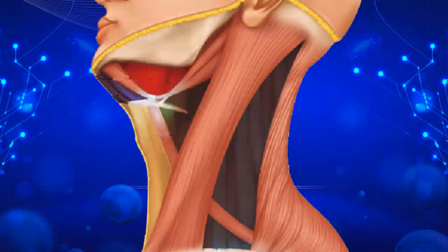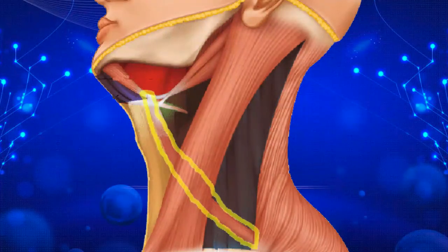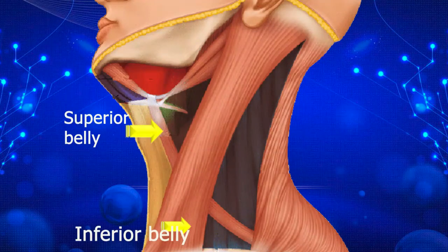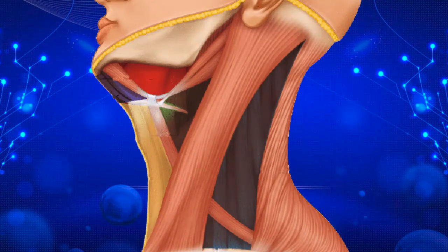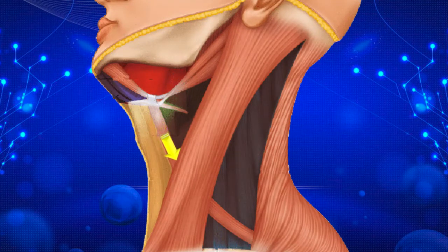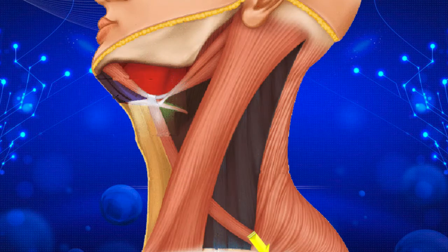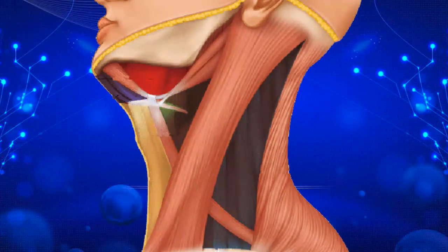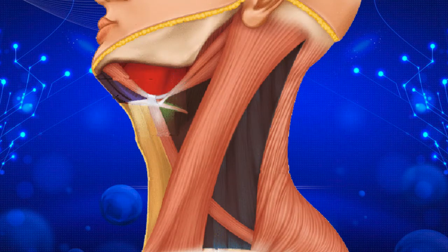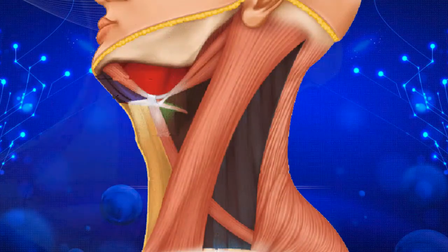Let's look at the omohyoid. This is a flat strap of muscle that has two bellies too, the superior belly and inferior belly. It runs down from its attachment on the inferior border of the hyoid bone and passes beneath the sternocleidomastoid muscle. From its origin to the sternocleidomastoid muscle is the superior belly. The inferior belly runs to its attachment on the transverse scapular ligament and upper border of the scapula.